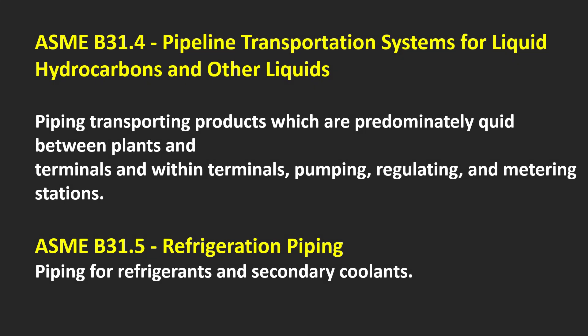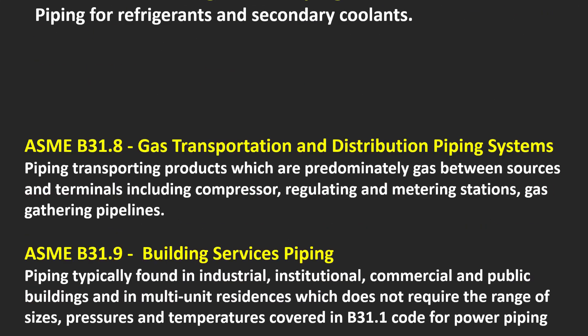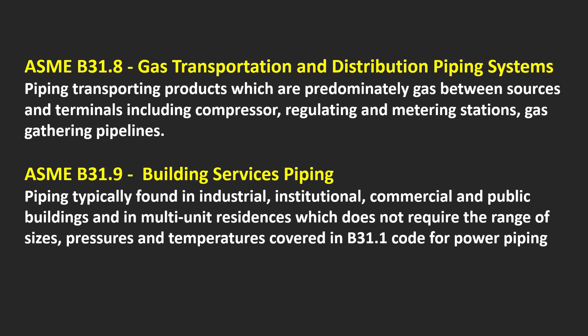ASME B31.4 covers pipeline transportation systems for liquid hydrocarbons and other liquids — piping transporting products predominantly between plants and terminals and within terminals, pumping, regulating, and metering stations. ASME B31.5 covers refrigeration piping for refrigerants and machinery coolants. ASME B31.8 covers gas transportation and distribution piping systems — piping transporting products between sources and terminals including compressor stations, gas metering stations, and gas gathering pipelines.